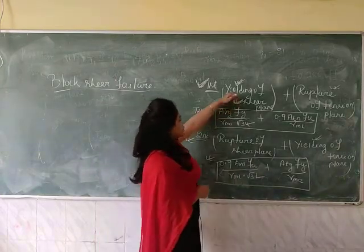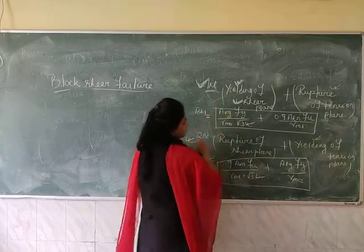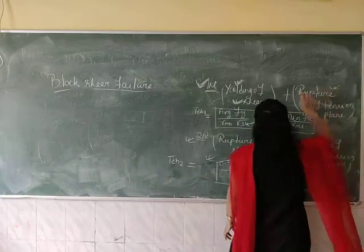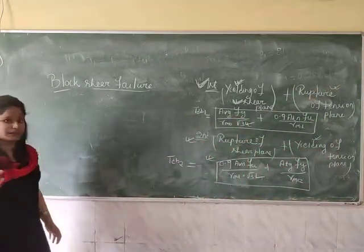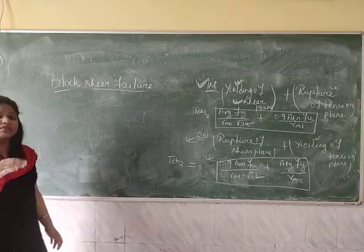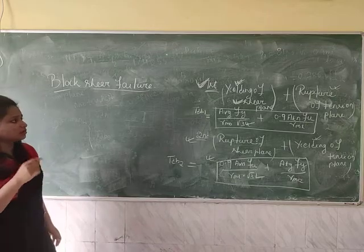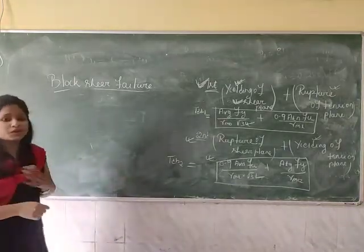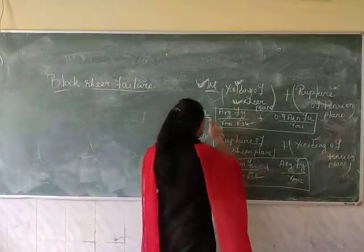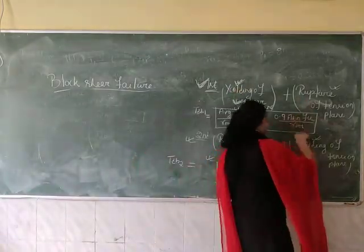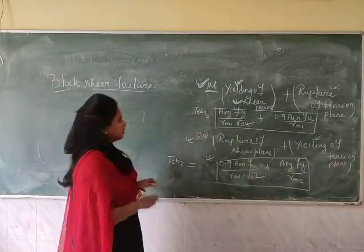For the yielding term, take the gross area using the formula Ag × Fy / γm0 — the same formula used for calculating strength of a solid plate. For rupture, use the formula 0.9 × An × Fu / γm1. Fy is the yield stress, Fu is the ultimate stress.